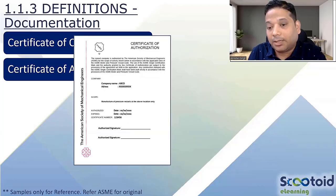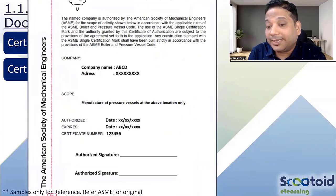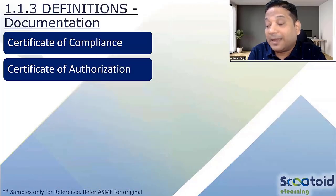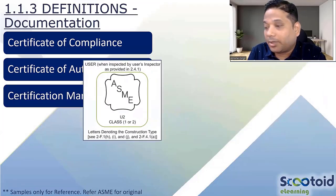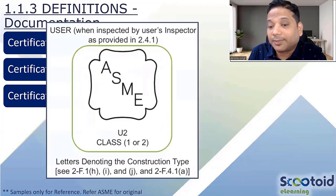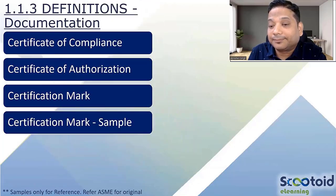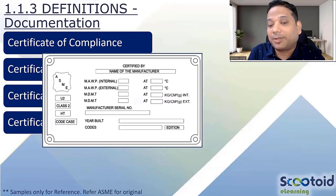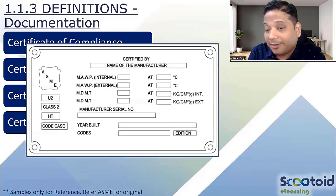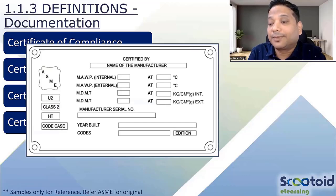Once the Certificate of Authorization is in place, you can fabricate a U2 stamp job — we are talking about Division 2. The certification mark is used on your job in the form of a nameplate. Your certification mark goes on the nameplate along with all other required details. Basically, the nameplate is your certification from the manufacturer.